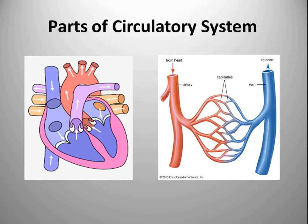Now let's talk about blood vessels. Blood vessels are the thin tubes that run through the entire body to transport blood. The different blood vessels are arteries, veins, and capillaries. As you can see here on the screen, arteries are of red color, veins are of blue color, and these are the capillaries. So there are three types of blood vessels in our body.